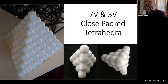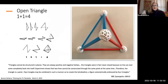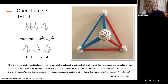The 20 sphere, three-frequency tetrahedron and the seven-frequency tetrahedron also show the interprecession. Bucky talked about it as a kind of growing nested structure. The open triangle that I was talking about earlier with Robert Horne and Buckminster Fuller — Bucky said triangles cannot be structured into planes, they are always positive and negative helixes. The triangles were in fact never closed because no line can completely come back onto itself. He made a big point about two lines not being able to come through the same point at the same time. He saw the triangle itself as a spiral.